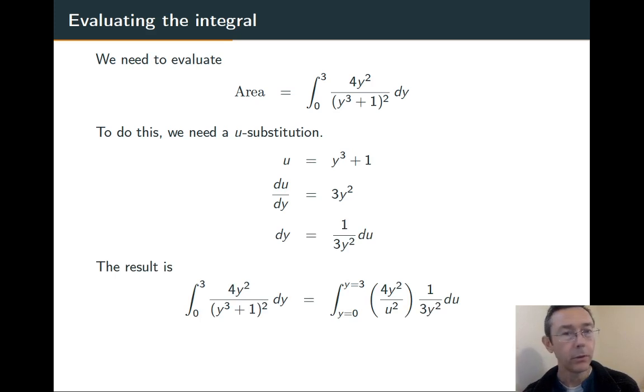We differentiate and solve for dy and then plug into the integral. So I took out the y³ plus one, replaced it with what it's equal to, u, and then took out the dy and replaced it with one over 3y² du. Notice that I put y equals zero and y equals three for the limits of integration. I don't want to confuse those for u values. When I eventually substitute in, I have to make sure I plug those in for y.